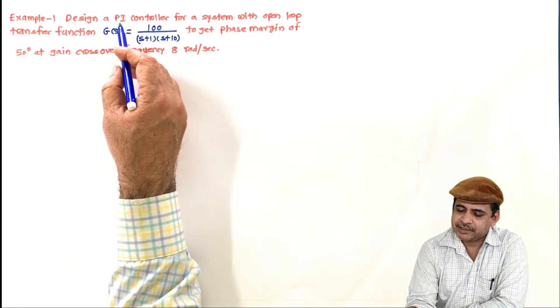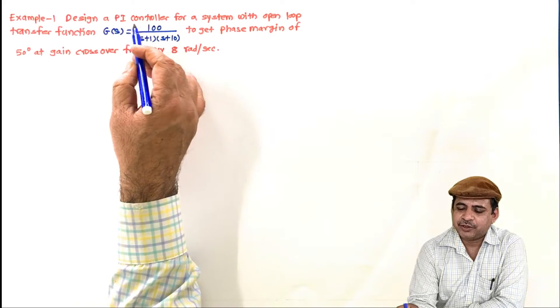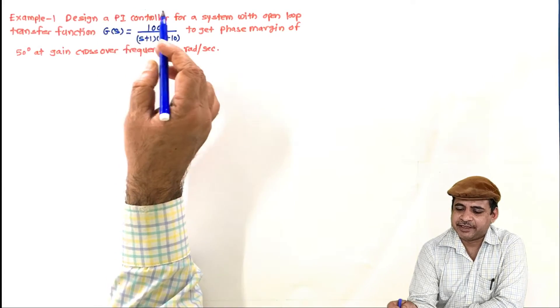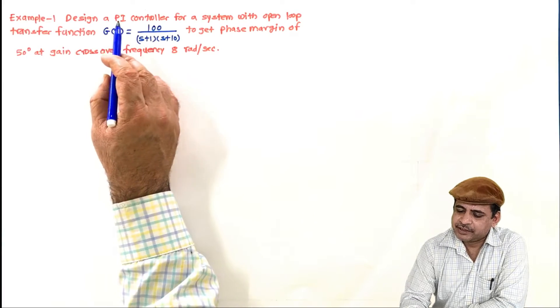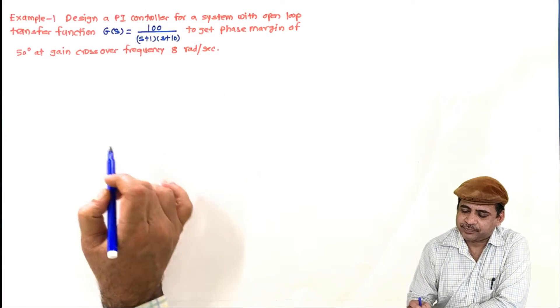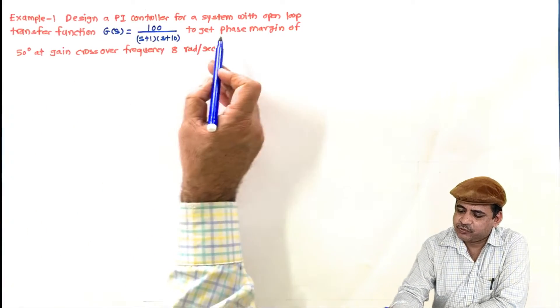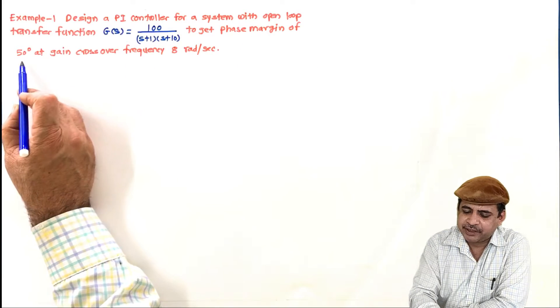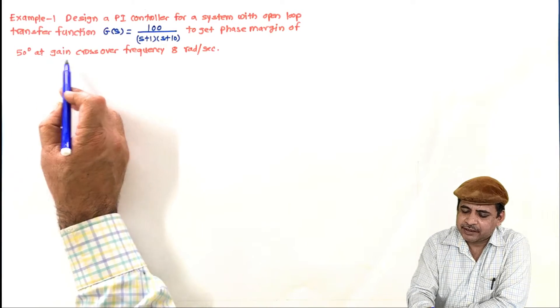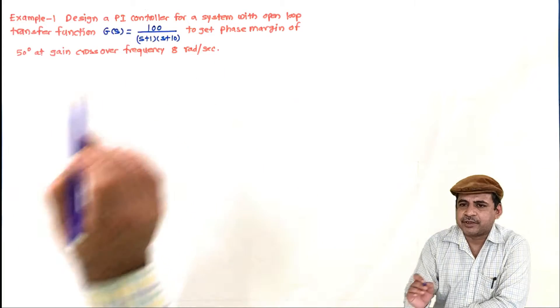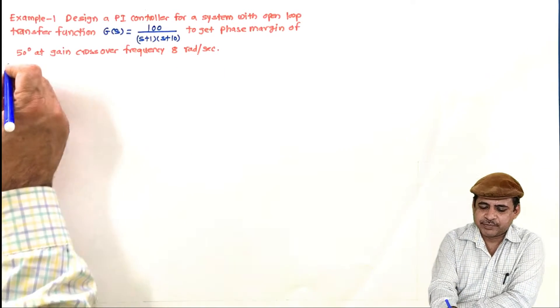Hence, for such systems, we always have to design either PI or PID. In this case, it is asked to design a PI controller. What is given: for this system, we should get the phase margin of 50 degrees at gain crossover frequency of 8 radian per second. So let us begin.